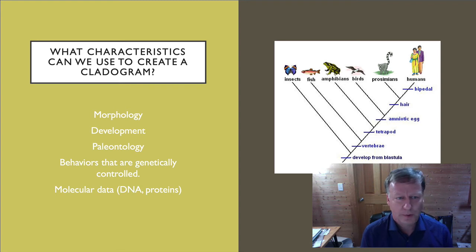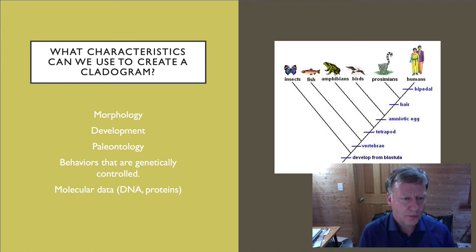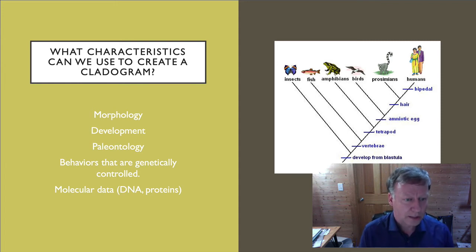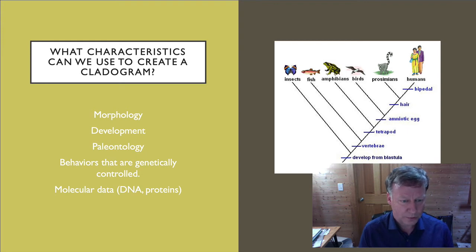So what characteristics can we use when we create a cladogram? You can use lots of different things. Traditionally, morphology — the physical features of an organism — was used. How organisms develop could also be used. Paleontology, looking at fossils, is especially useful for ancient lineages. Behaviors that are known to be genetically controlled can also be used. More recently, we've started to use DNA similarities and proteins. More similarities indicate two species are more closely related, and fewer similarities indicate they split further or longer ago.